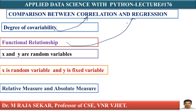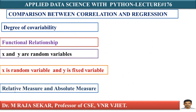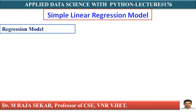In correlation, both x and y are random variables. Whereas in regression, x is a random variable and y is a fixed variable. The coefficient of correlation is a relative measure, whereas the regression coefficient is an absolute measure. In future classes, you can understand these terms with more insight.